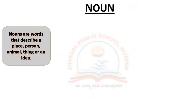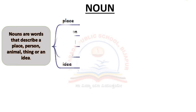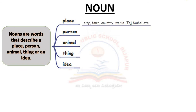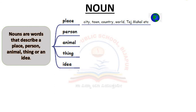Nouns are words that describe a place, person, animal, thing, or an idea. Let's look at the words that come under each of them. For places: city, town, country, world, Taj Mahal, etc. — all kinds of places.